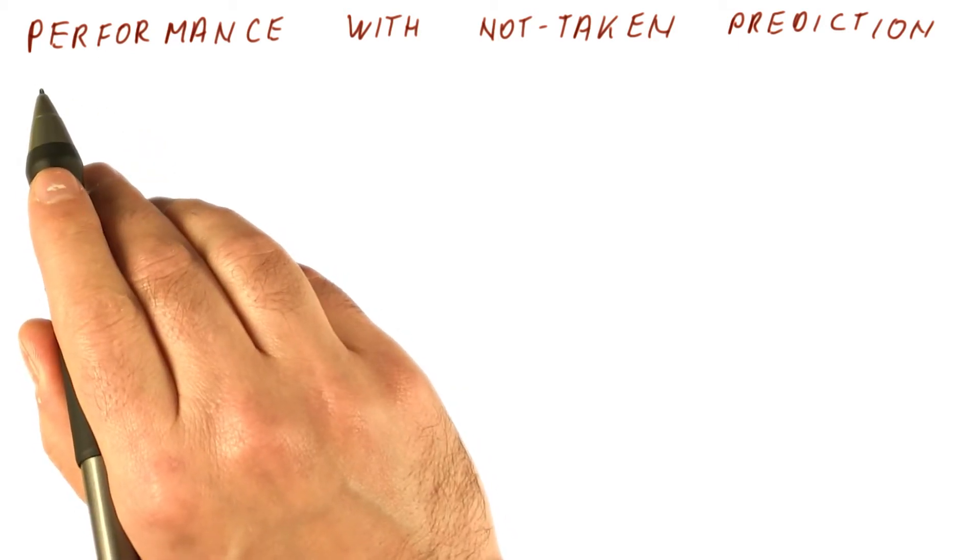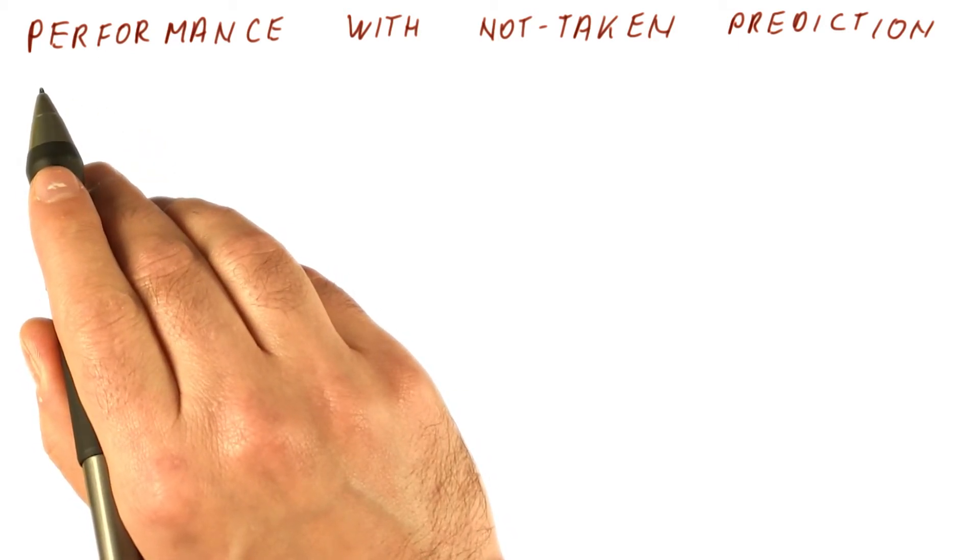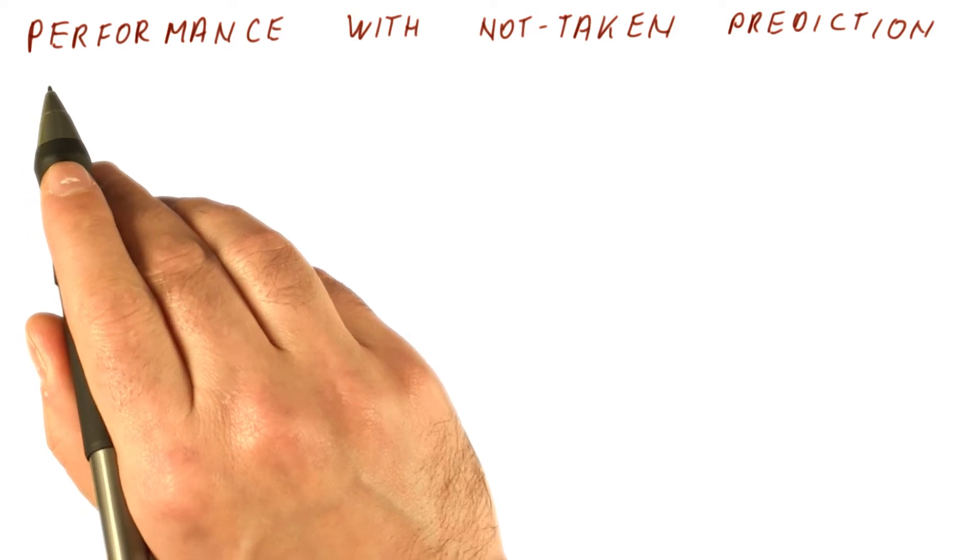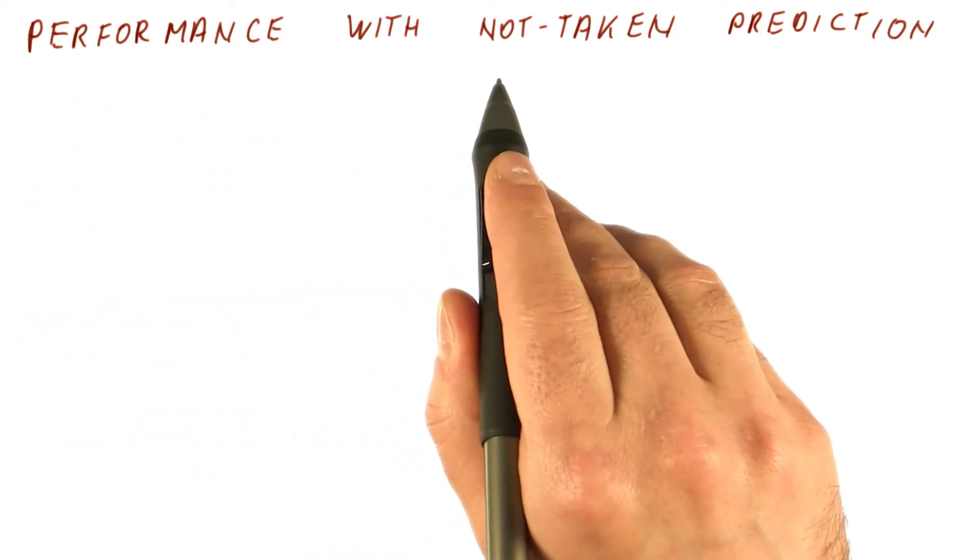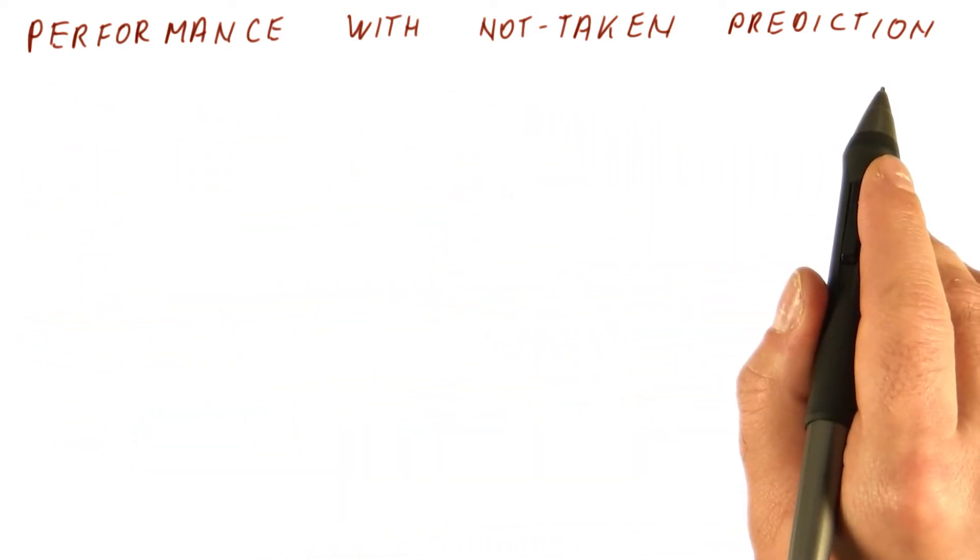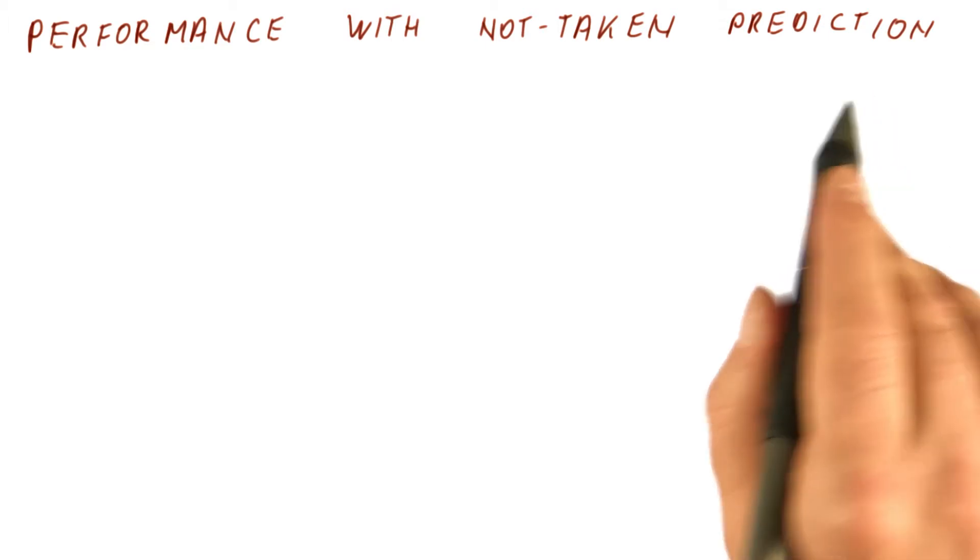So now that we have seen what the performance looks like when we refuse to make any predictions, let's see what the performance is with the so-called not taken prediction, which amounts to simply fetching the next instruction as if none of the instructions was a taken branch.